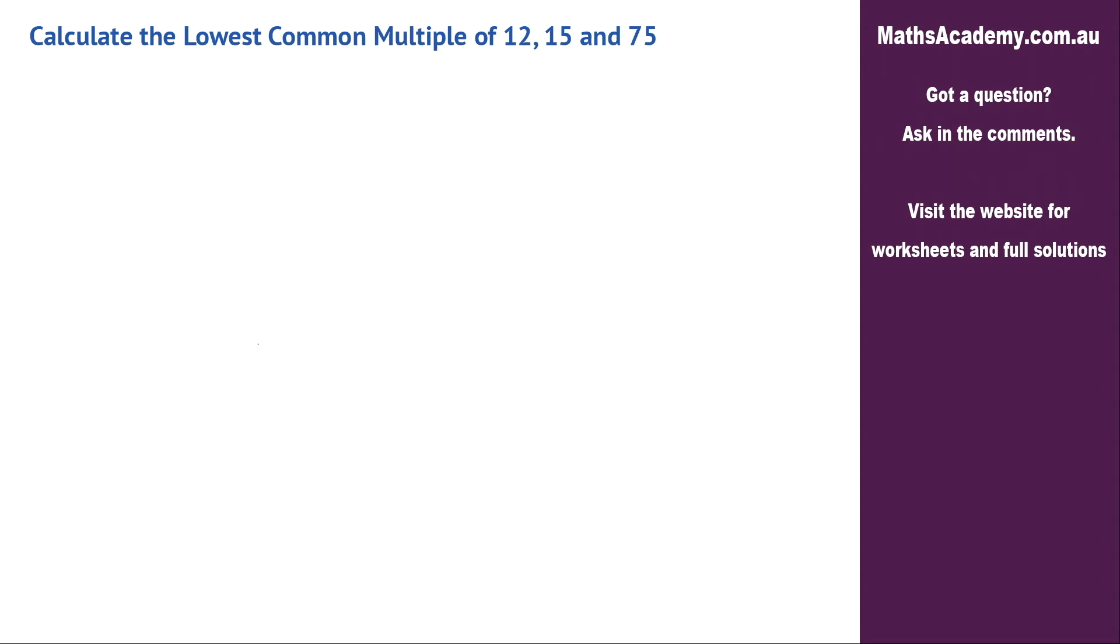In this question, we're asked to calculate the lowest common multiple of 12, 15 and 75. Now, some of you might know it as the least common multiple, but same thing.